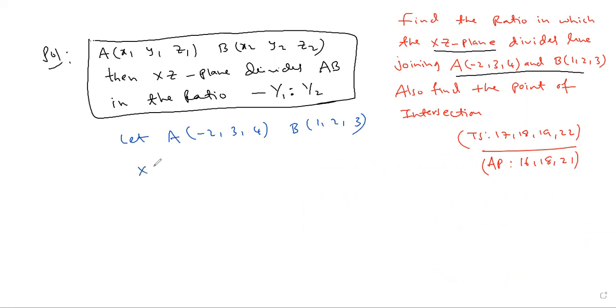So XZ plane divides AB in the ratio -Y1 to Y2, which is equal to -3 is to 2. Y1 is 3, Y2 is 2, so -3 to 2.